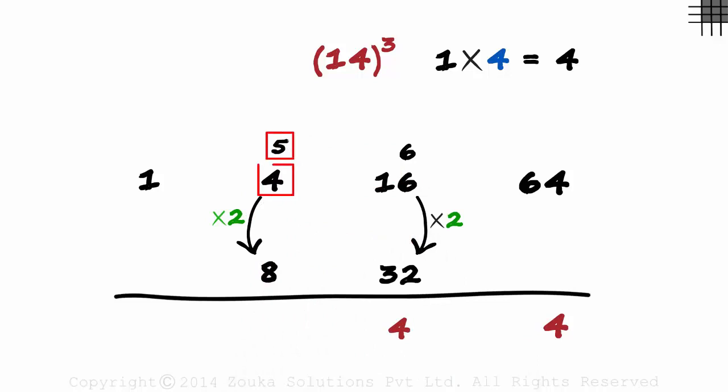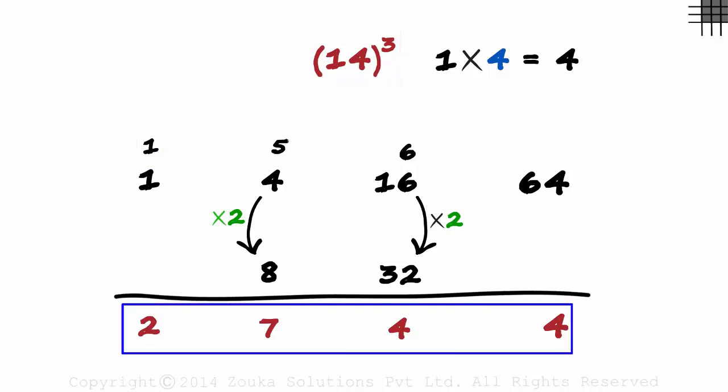5 plus 4 plus 8 equals 17. 7 here and carry the 1 over. 1 plus 1 is 2. 14³ is 2744.